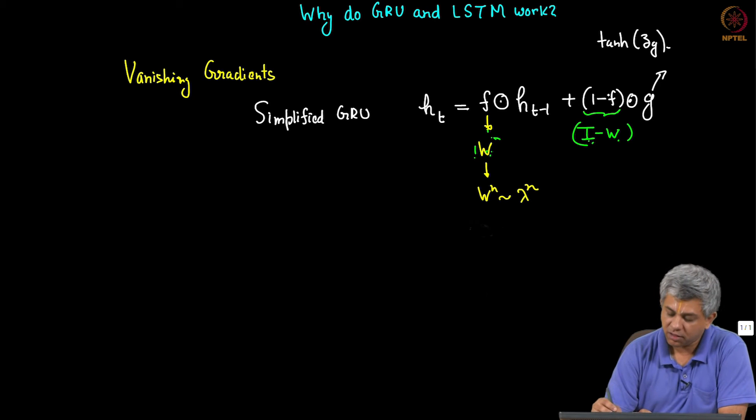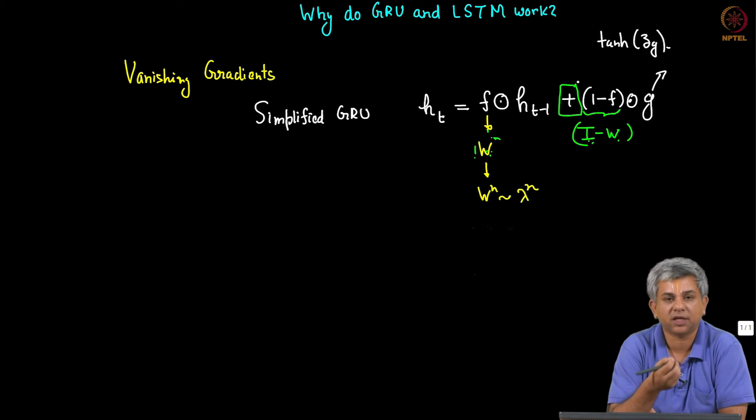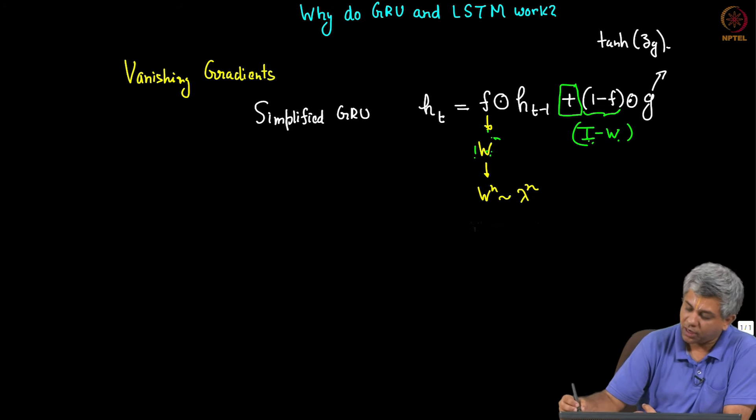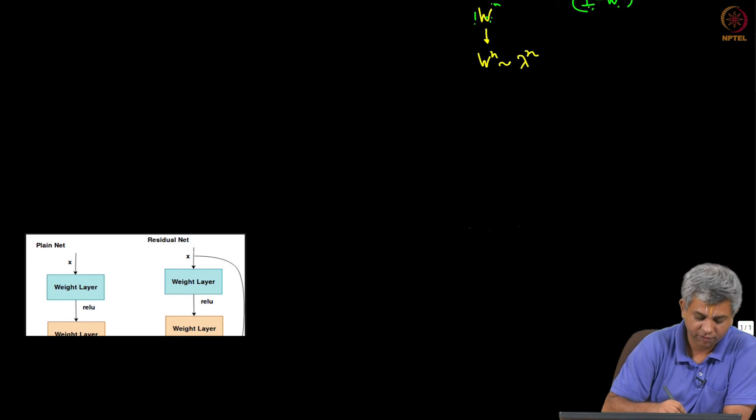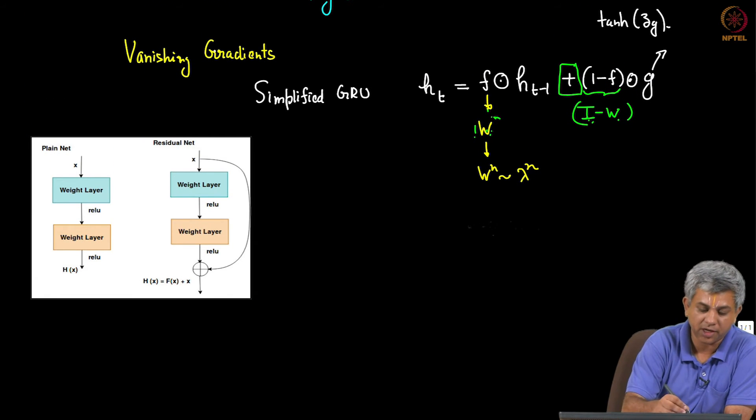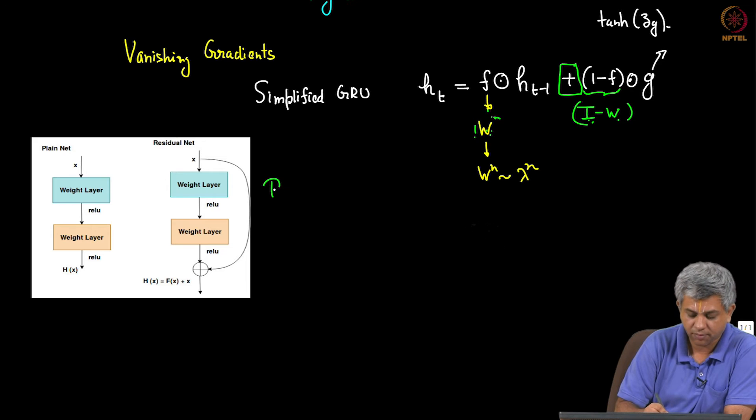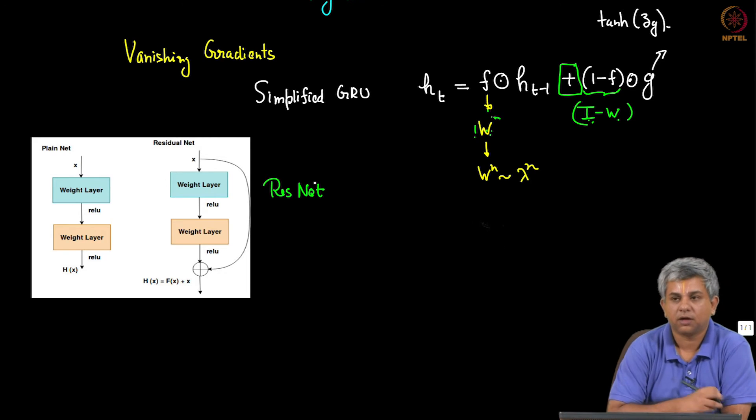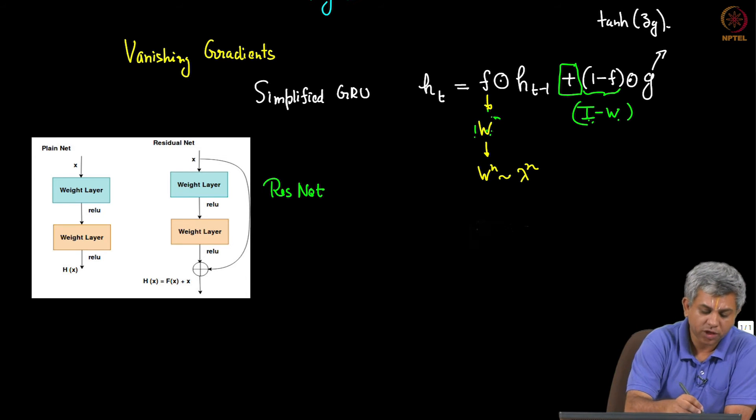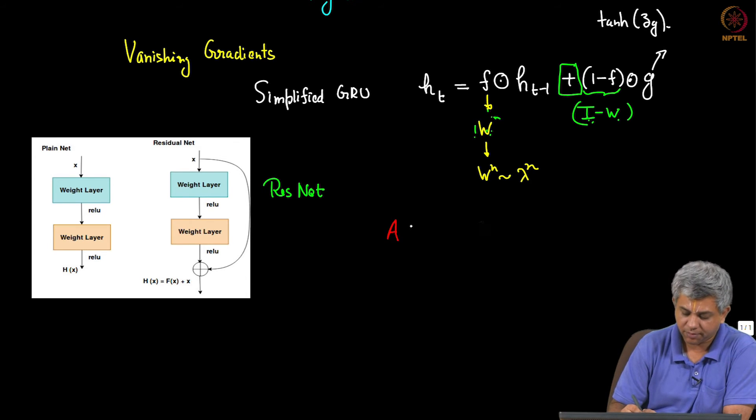More importantly, this plus is what makes things work. Why does this plus make things work? Because you can now visualize this, as you might recall from Dr. Ganapathy's videos, this is nothing but the architecture of ResNet. And there, whether it was ResNet or AlexNet and several other cases, you actually saw that there is an alternate pathway for the gradient.